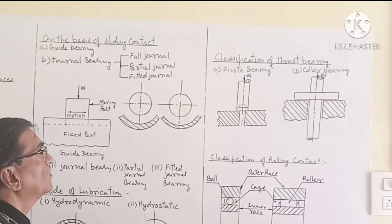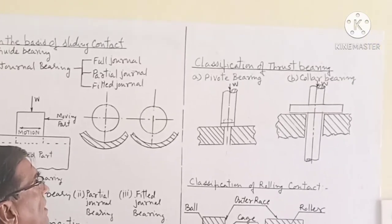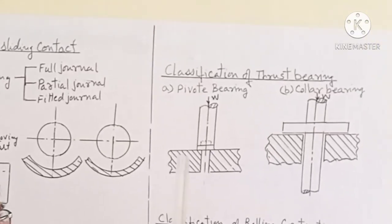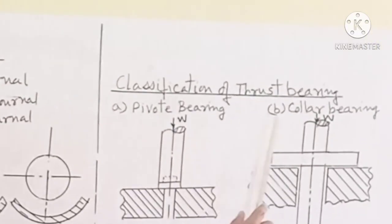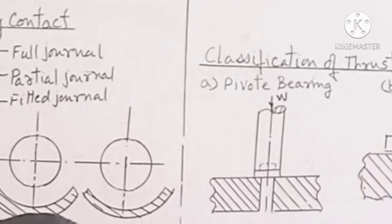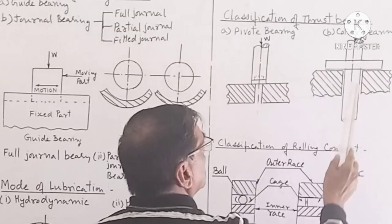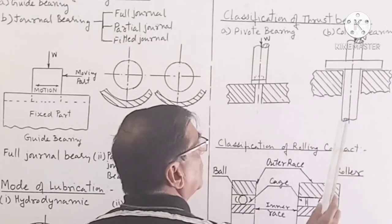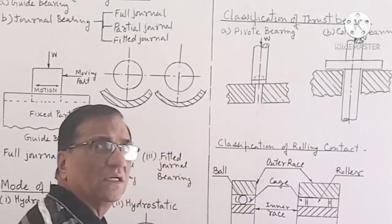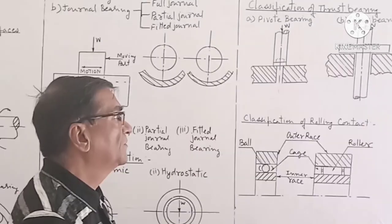Next is the classification of thrust bearing. This is pivot bearing and this is the figure of collar bearing.